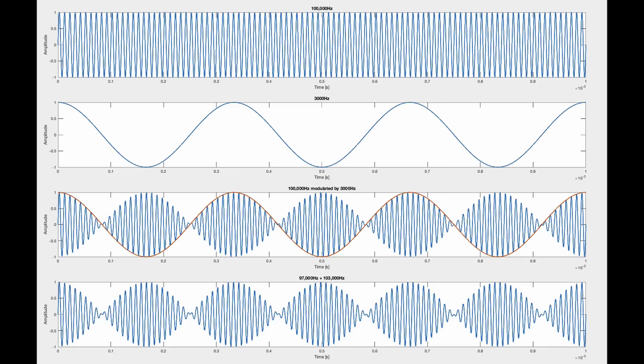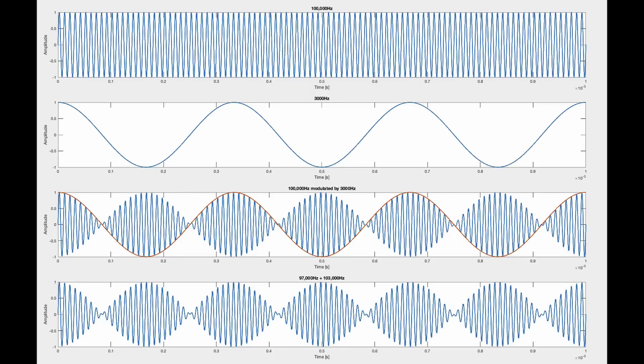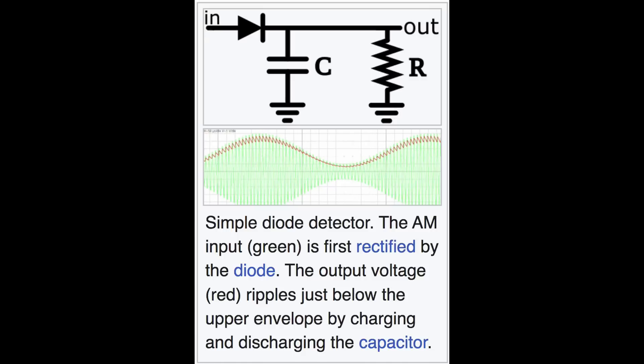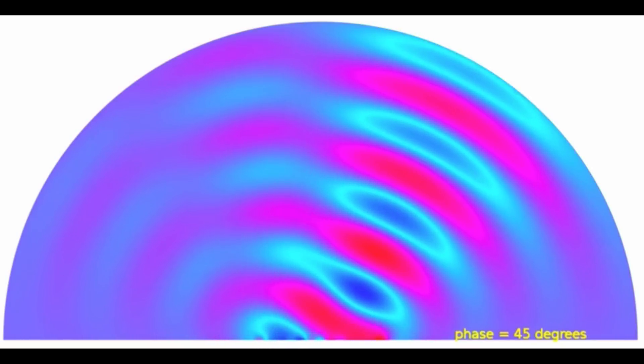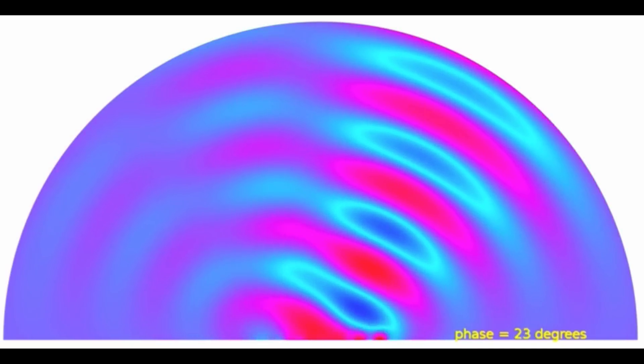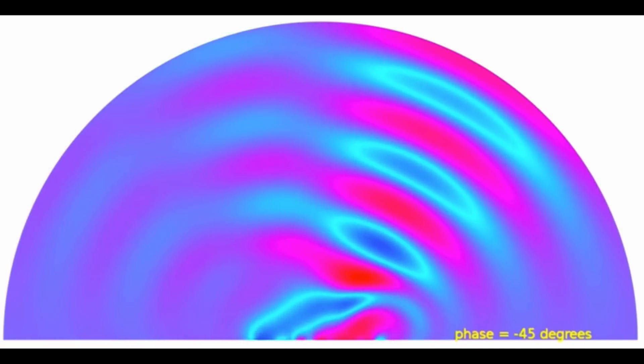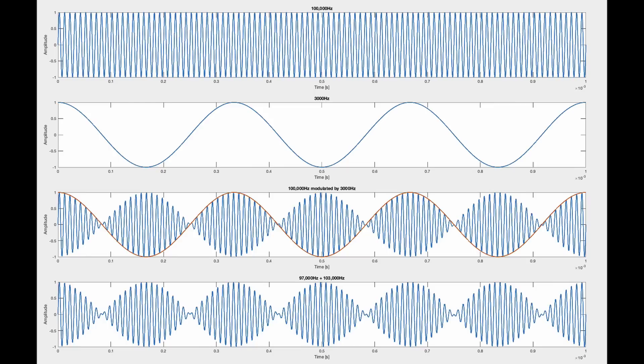Anyway, we still wouldn't be able to hear this sound because it's essentially just turning up and down the volume of a frequency that we can't hear. The circuitry in your AM radio does something called demodulation to extract this lower frequency from the high frequency one. For a parametric speaker, the air itself actually is doing the demodulation. No circuit required.